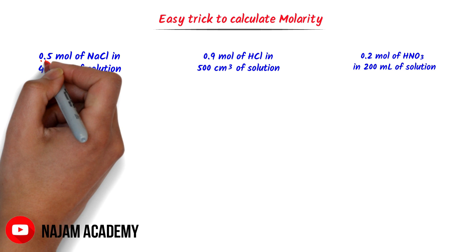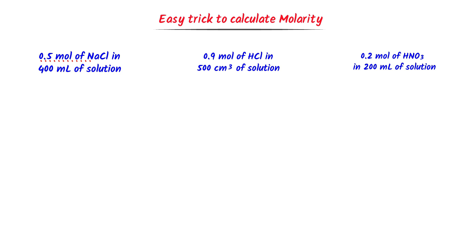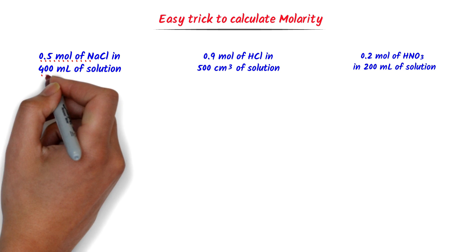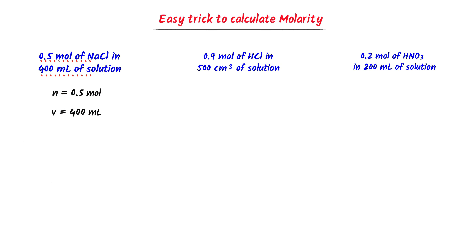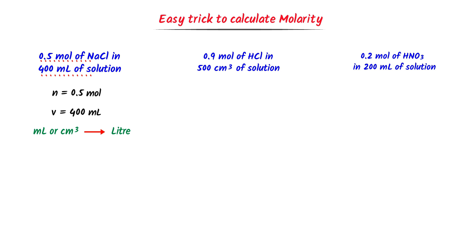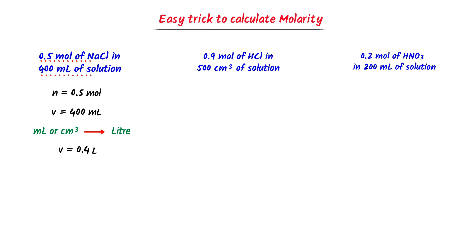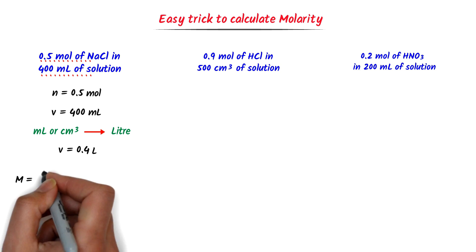In this question, 0.5 moles of sodium chloride is dissolved, so the number of moles of solute N equals 0.5 mol. Secondly, the volume of solution is 400 ml. Remember that when volume is given in milliliter or centimetre cube, we have to convert it to litre. The easy trick is to move the decimal point 3 times to the left, or divide milliliter by 1000. After moving the decimal point 3 times to the left, I get 0.4 litre.